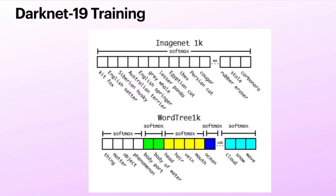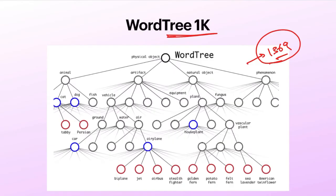For example, for dog breeds — German Shepherd, Husky — all of these are still dogs. So you group all of these and take the softmax across all dog categories. Looking at this tree structure, you take one softmax for one group, a second softmax for another group, and a third softmax for another group. So for every group of objects, you take one softmax individually.